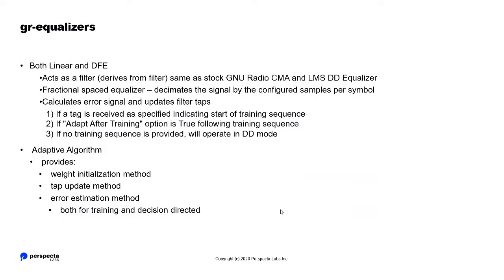And this algorithm object also takes in a constellation object if you want to do decision-directed equalization. The linear and decision feedback, they're both a filter. They're fractional spaced equalizers, which means it's going to take in an upsampled signal by some samples per signal, and then it's going to decimate the output down to your sample rate. Each adaptive algorithm is going to initialize the weights some way, update the taps, and also provide some error estimation.